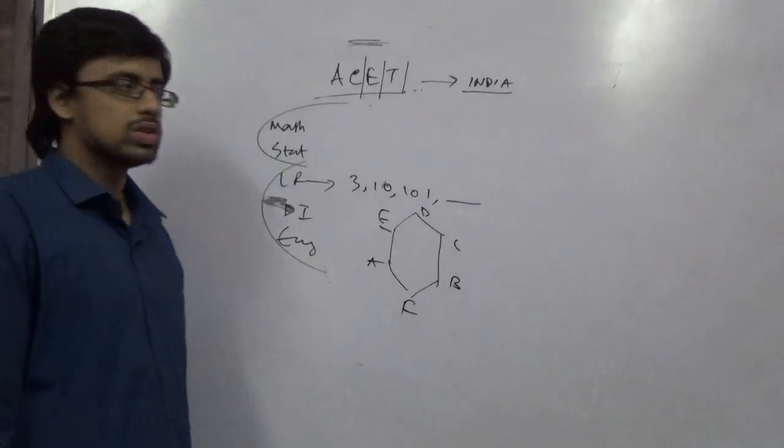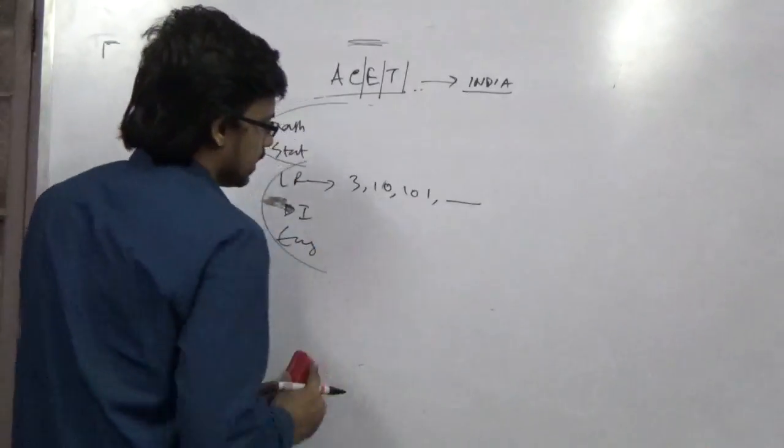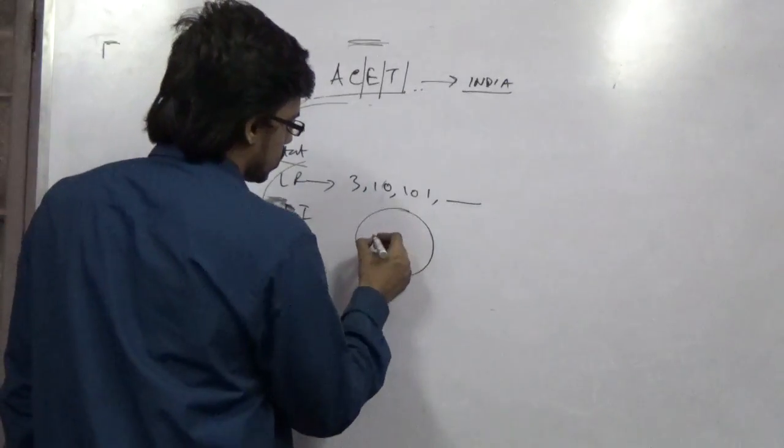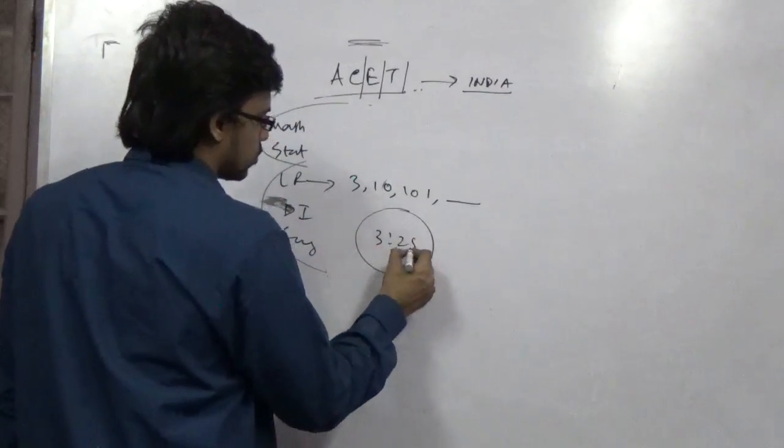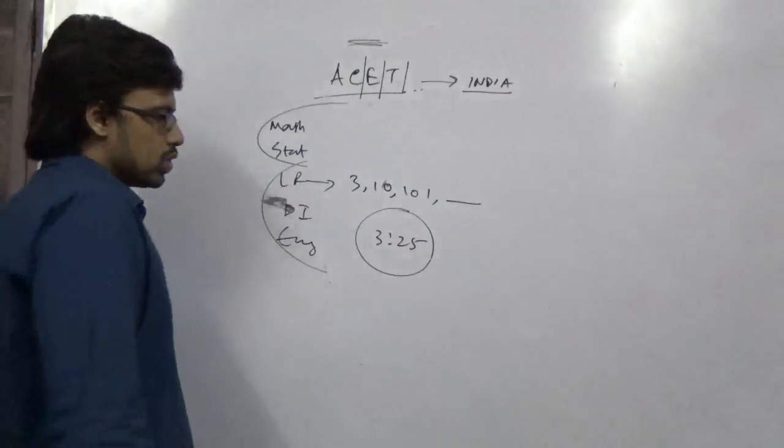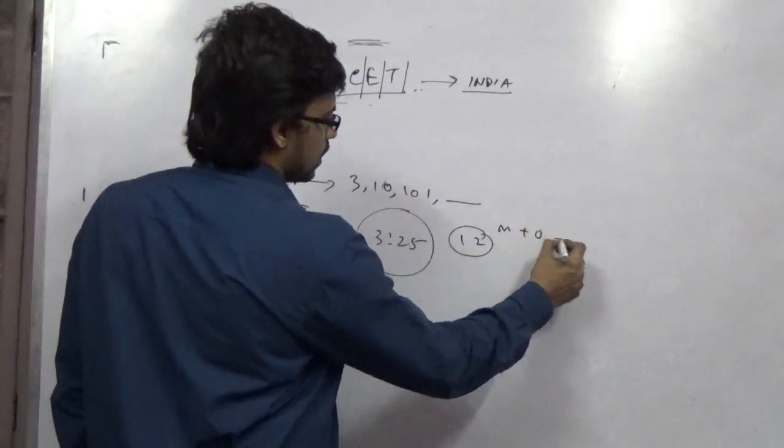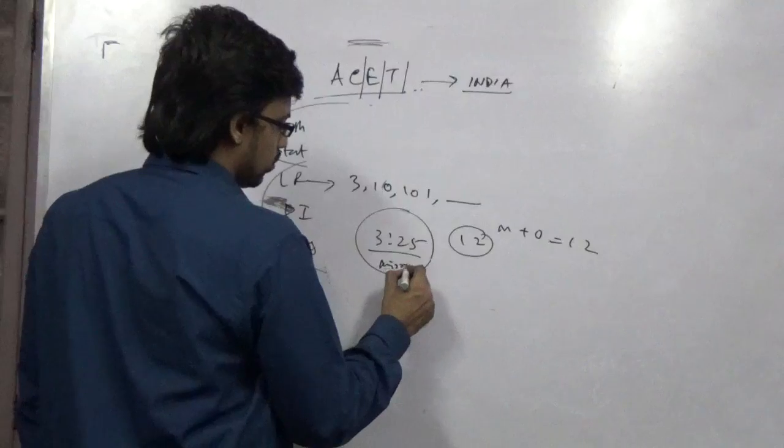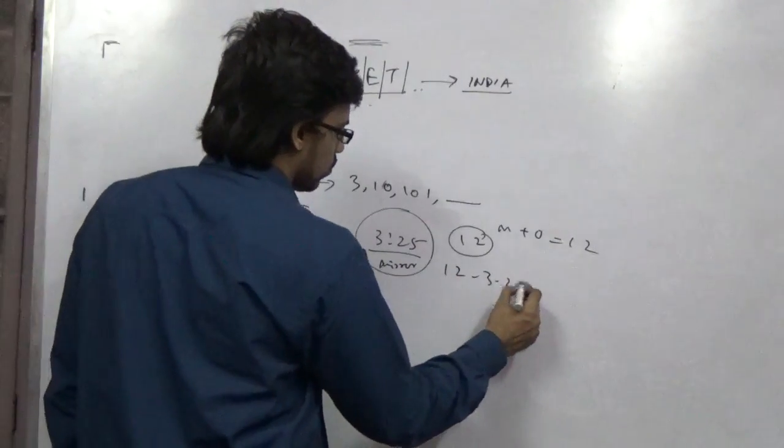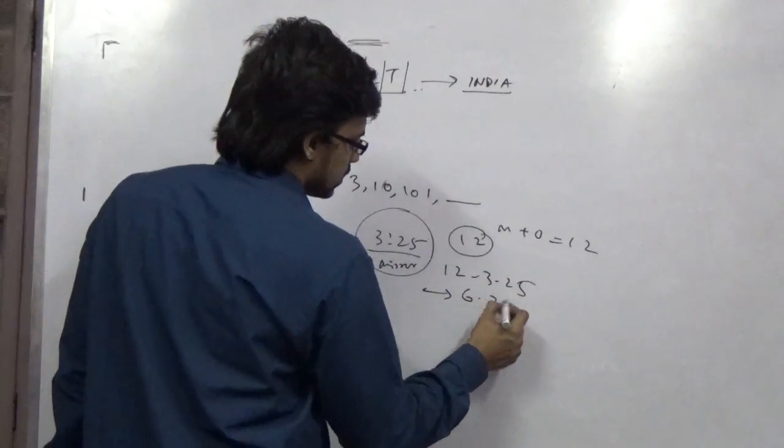Or there may be questions like clock problems like if the mirror shows 3:25, so this is the original time. So there we introduce a formula like mirror plus original equal to 12. So if the mirror shows 3:25, so 12 minus 3:25, so this says 8:35.